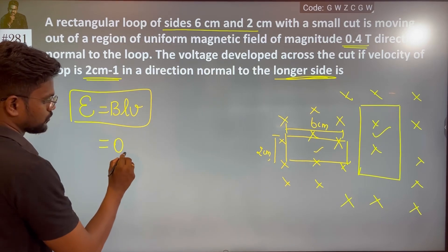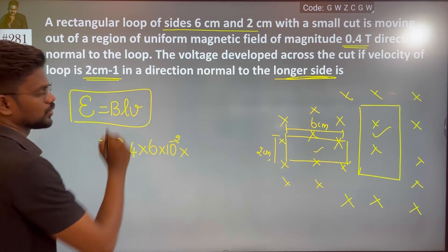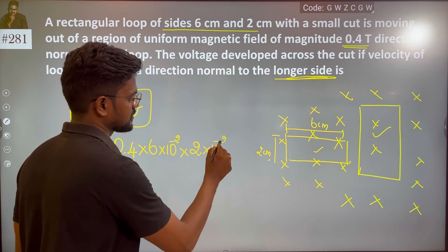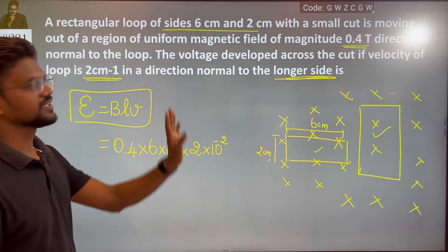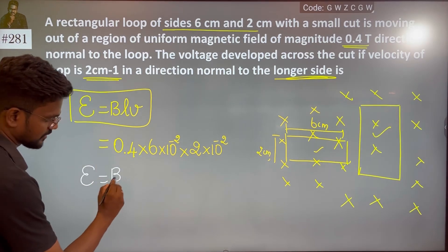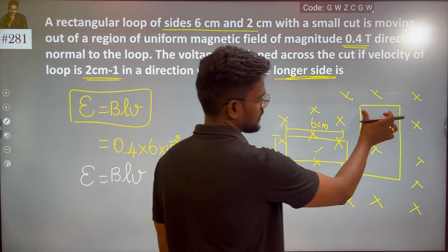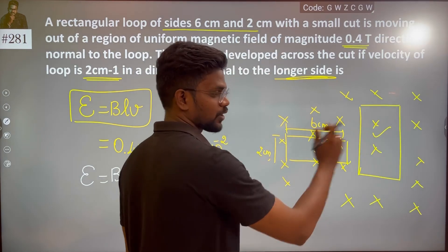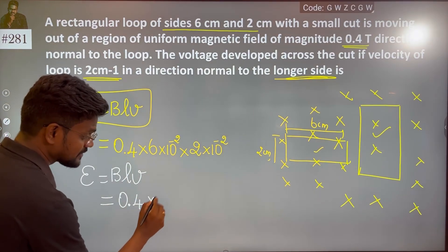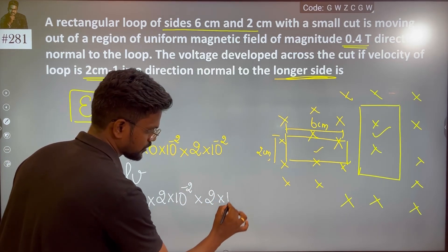The magnetic field is 0.4 tesla. We are not talking about the longer side; we are talking about the shorter one. The length is 2 cm, which is 2 × 10⁻² m, and the velocity is also 2 × 10⁻² m/s.